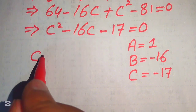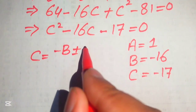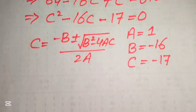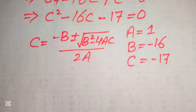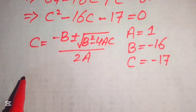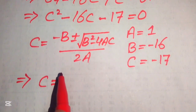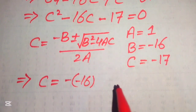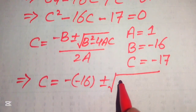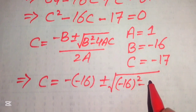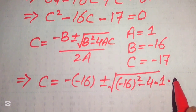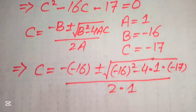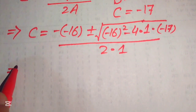We state the quadratic formula as: C equals minus B plus or minus square root of B squared minus 4AC, divided by 2A. Substituting our values — B is minus 16, A is 1, C is minus 17 — it becomes: minus of minus 16, plus or minus square root of (minus 16) squared minus 4 times 1 times minus 17, divided by 2 times 1.